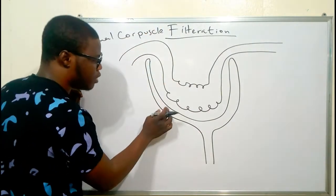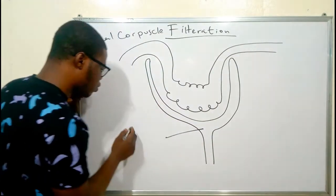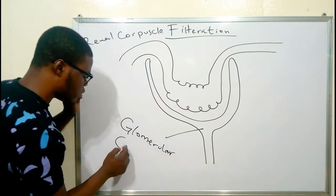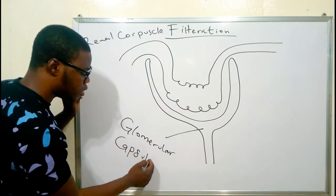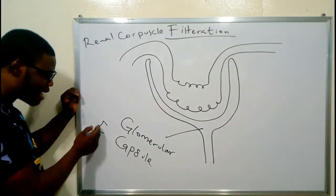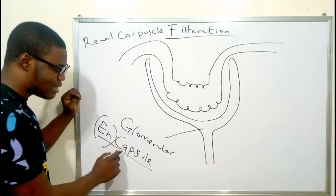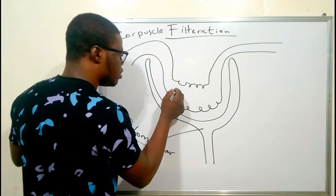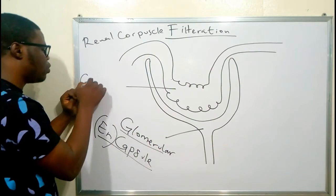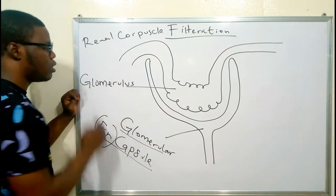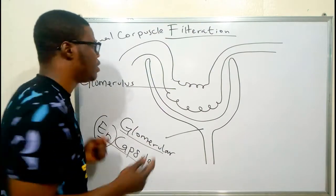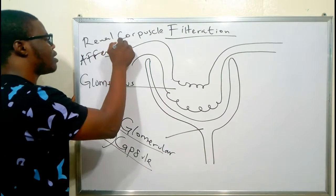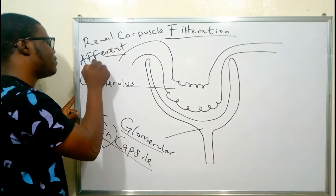The renal corpuscle is the combination of the cup-shaped structure called the glomerular capsule, which encapsulates the glomerulus. In filtration, blood enters the glomerulus from the afferent arteriole. The glomerulus looks like a sieve — it has pores because it is a fenestrated capillary bed. Make sure you check the nephron video so you will understand everything being discussed here.